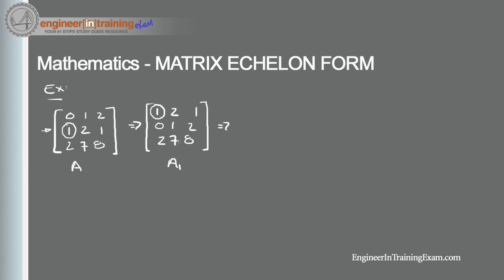Calculating: negative 2 times 1 added to 2 gives 0; negative 2 times 2 is negative 4 added to 7 gives 3; negative 2 times 1 is negative 2 plus 8 gives 6. All other rows remain the same. We're one step closer to row echelon form but we're not there yet.